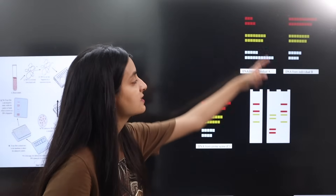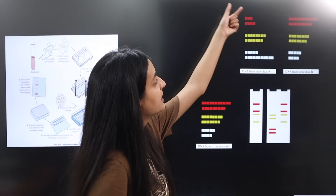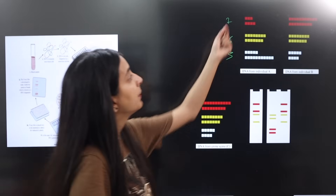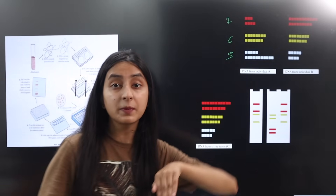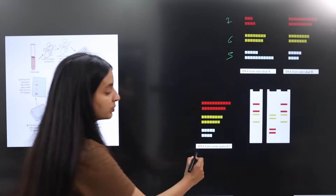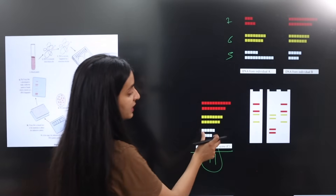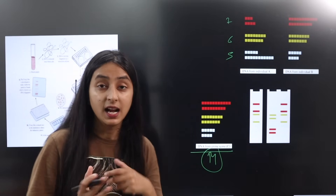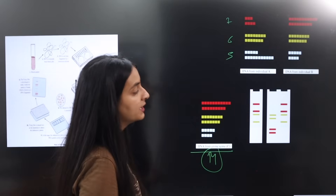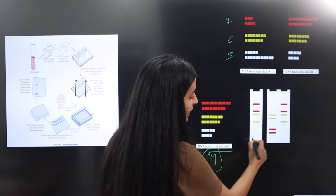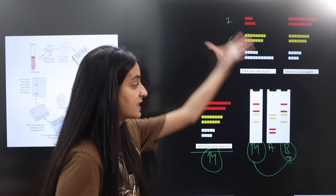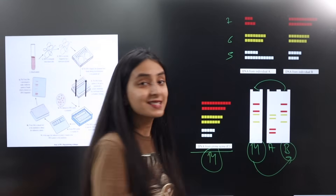In your NCERT textbook, there is an example showing this process. Three chromosomes — such as chromosome numbers 5, 6, and 7 — of person A and person B are compared with the DNA from the crime scene. We do not know how many repetitive units are present. After doing DNA Fingerprinting and observing the X-ray film band pattern, we can determine which person's DNA matches the crime scene sample, and that person is identified as the murderer.